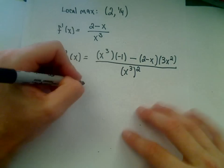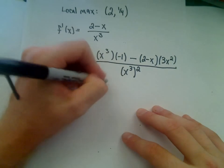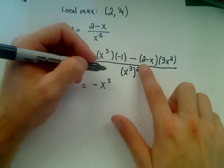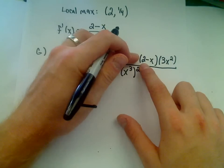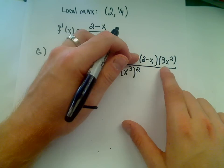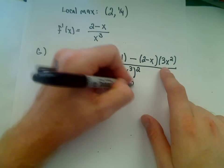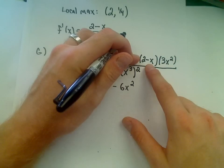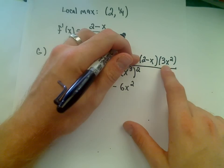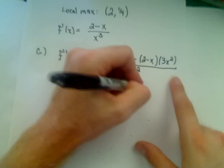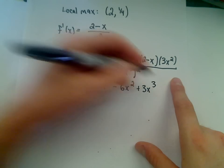Alright, so again, you're going to want to clean this up. So the top, it looks like you get negative x cubed. Again, if you foil out, you'll get 2 times 3x squared, which is going to give you 6x squared, but the negative is going to make it negative 6x squared. If you distribute the negative x, you'll get negative 3x cubed, but then it will become a positive 3x cubed.